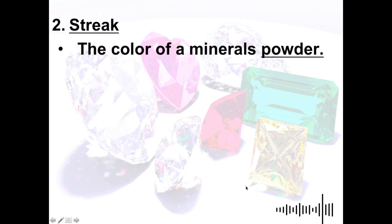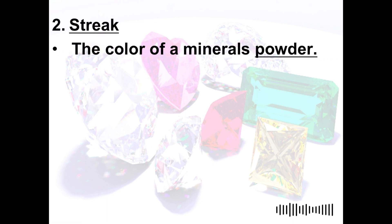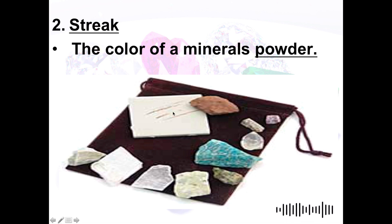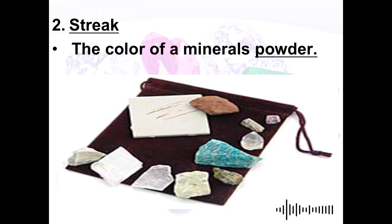The next property is streak. Streak is the color of a mineral's powder. We determine this by taking a portion of the mineral and rubbing it on the surface of an unglazed porcelain plate, then observing the color of the marks left behind.